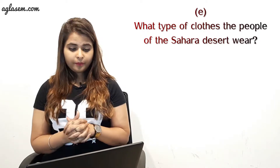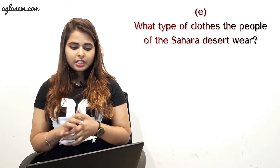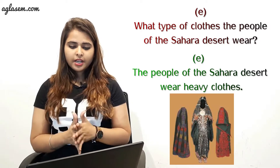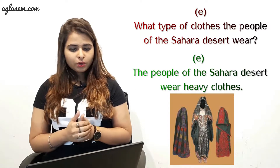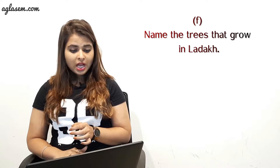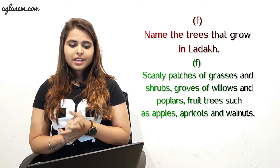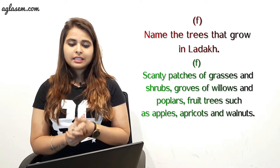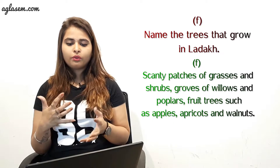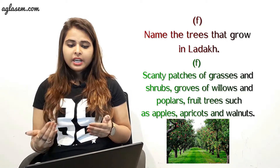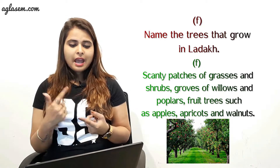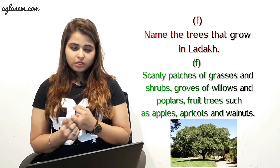The next question is: what type of clothes do the people of the Sahara desert wear? The answer is: the people of the Sahara desert wear heavy clothes. The last question is: name the trees that grow in Ladakh. The answer is: scanty patches of grasses and shrubs, groves of willows and poplars, and fruit trees such as apple, apricot, and walnuts.